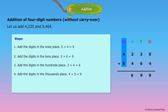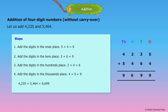Step 4: Add the digits in the thousands place. 4 plus 5 is equal to 9. Therefore, 4,235 plus 5,464 is equal to 9,699.